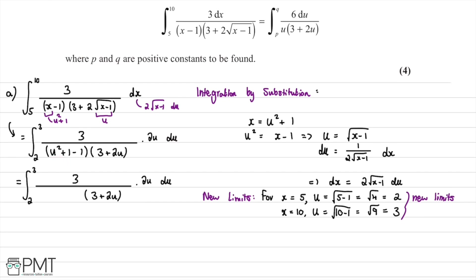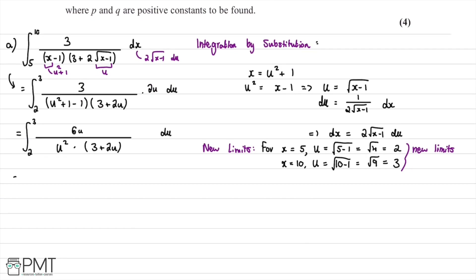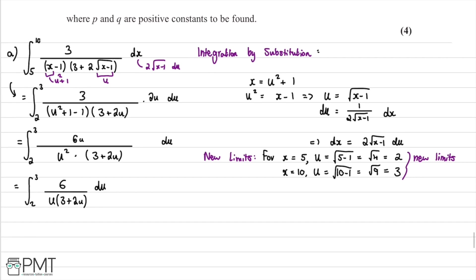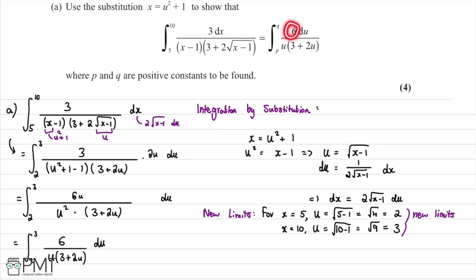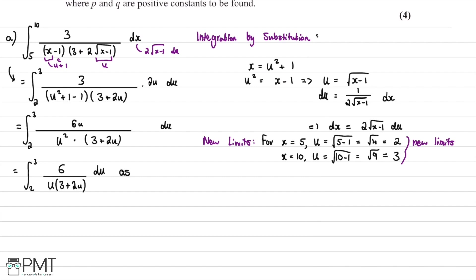Simplifying, u squared plus 1 minus 1 equals u squared. Multiplying 2u by 3 in the numerator gives 6u. Dividing numerator and denominator by u, the integral from 2 to 3 simplifies to 6 divided by u times 3 plus 2u, with respect to u. This matches the required form, so we've shown the result as required, with p equal to 2 and q equal to 3.